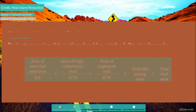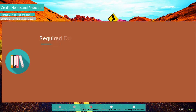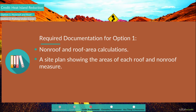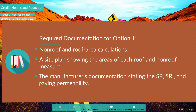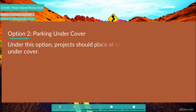To document Option 1, project teams should submit non-roof and roof area calculations, a site plan showing the areas of each roof and non-roof measure, and the manufacturer's documentation stating the SR, SRI, and paving permeability. Now let's take a look at Option 2, Parking Undercover.